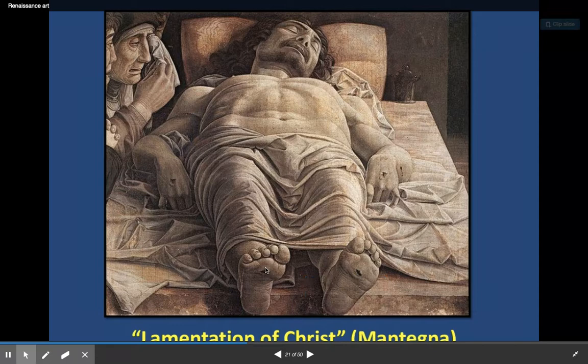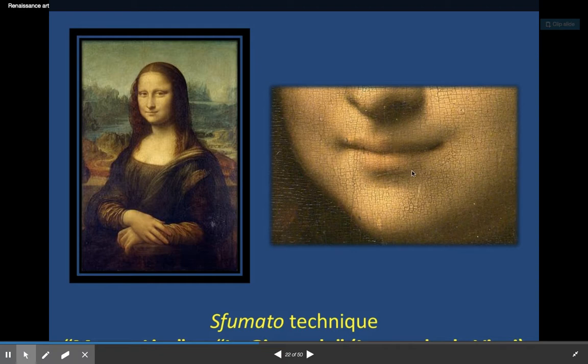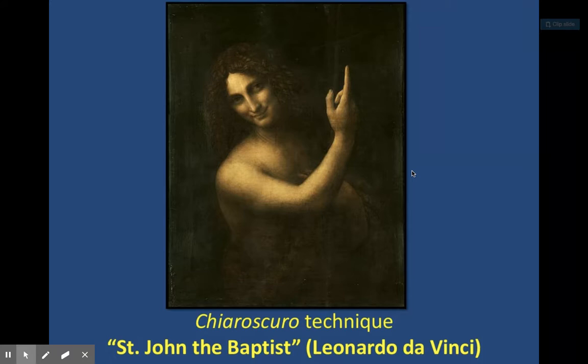You can tell the wrinkles on the clothing — it's much more realistic than what we saw in the medieval period. The smile of the Mona Lisa. Light and shade: Renaissance painters used light and shade to add perspective or add emotion.